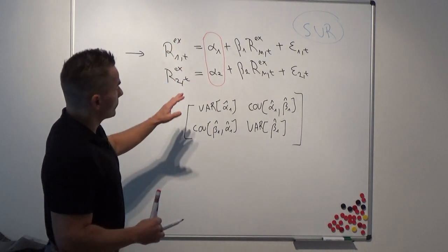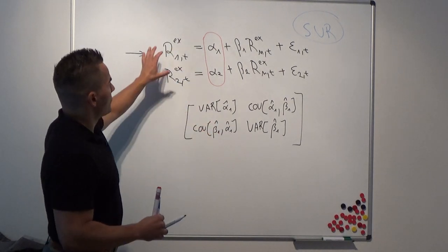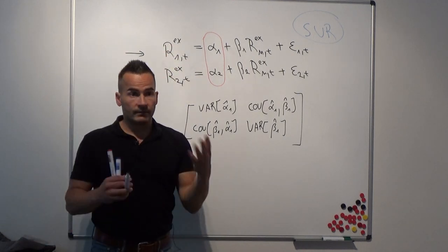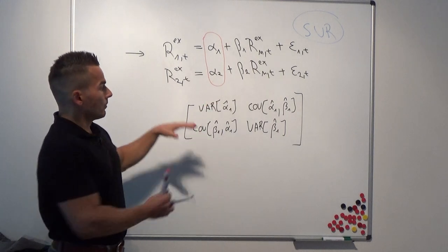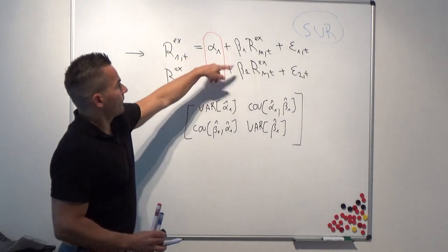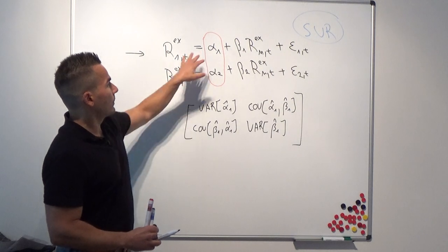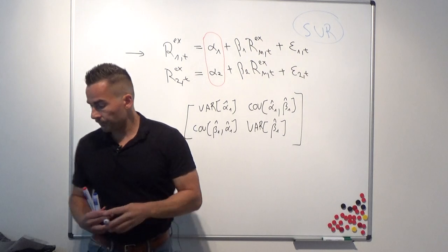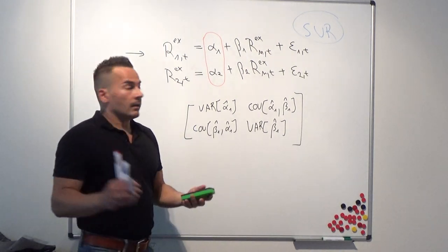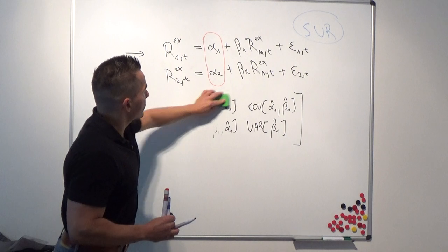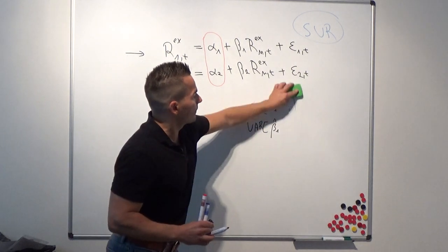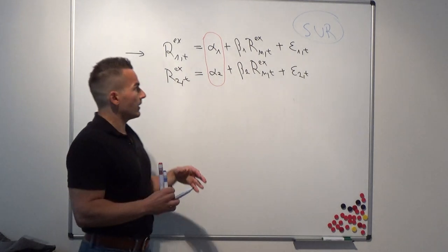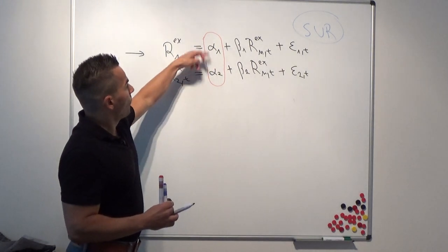This covariance matrix becomes bigger because now we have two equations. If you estimate this model simultaneously, your covariance matrix is, in this case, a 4x4 matrix — because we have two equations with two parameters each. But the part of the covariance matrix we are actually interested in is only the covariance and variance of these two point estimators.